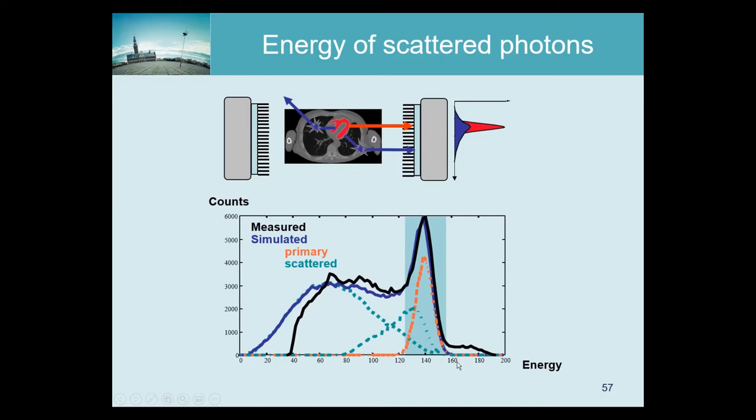Now we can ask the Monte Carlo simulation, just show us the spectrum of the primary photons, only the ones that didn't interact in the patient, and that's this orange line here. And then these are the scattered contributions. So this line here is the energy distribution, the measured energy distribution, of the photons that scattered once in the patient, and this line is the contribution of photons that scattered more than once in the patient. So we see that, yeah, and then we acquire photons within this energy window, and the aim of that energy window is to get as many truths as possible, as many primary photons as possible, and to reject as many scattered photons as possible.